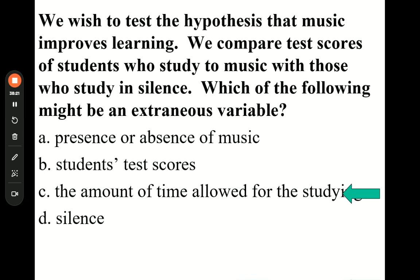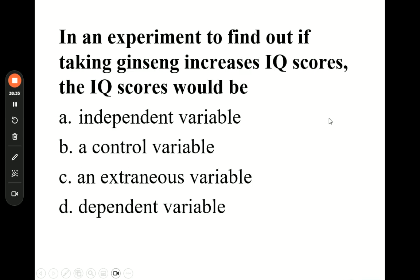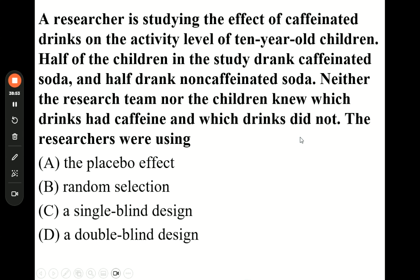If you give one group more time to study than the other group, that is a third variable problem. For the question about IQ scores — IQ scores would be what you're measuring, which is the dependent variable. 'Neither the research team nor the children knew which drinks had caffeine and which ones did not' — ladies and gentlemen, that's a double-blind experiment. That's a double-blind.